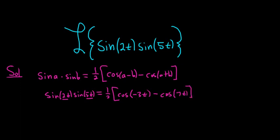Cosine's an even function, so it eats negative signs. So this is just going to be 1/2 cosine 3t, and then I'll distribute the 1/2 to the other piece as well, minus 1/2 cosine of 7t.